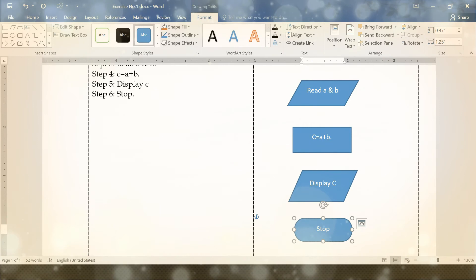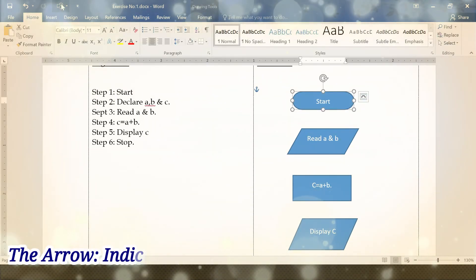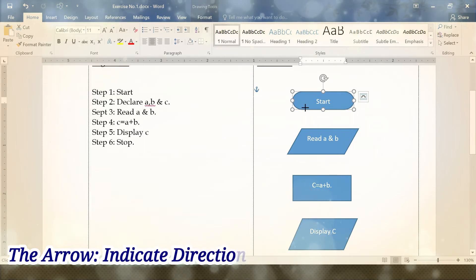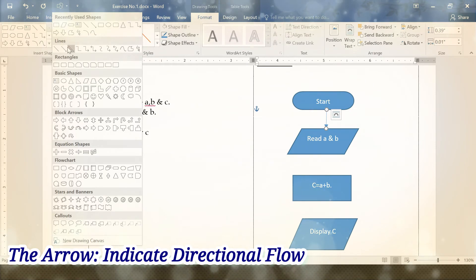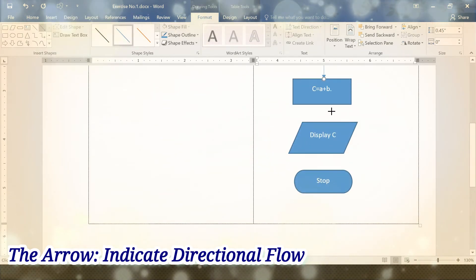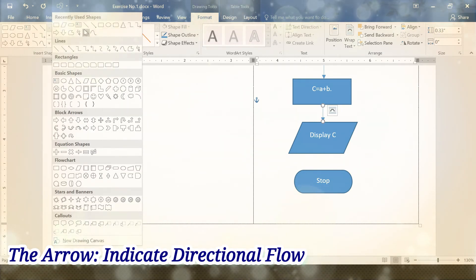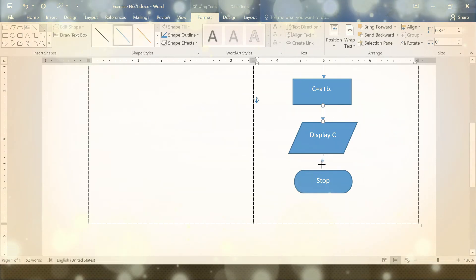Now we want to make the flow. Go to shapes where you can see the line, and draw lines connecting each symbol. Now we complete the flow.